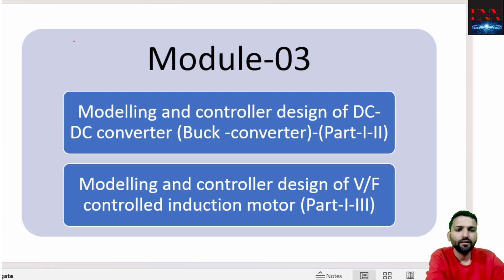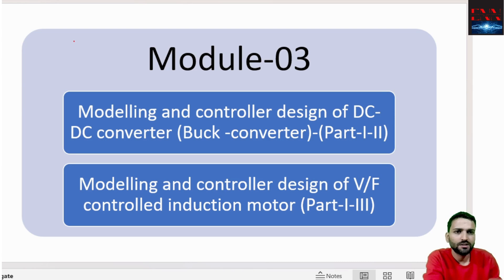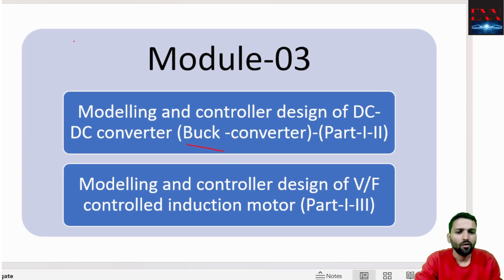The DC-DC converter taken here for the example is the buck converter. As we know, there are different types of converters. In non-isolated converters there are three converters: the buck converter which steps down the voltage, the boost converter which steps up the voltage, and the buck-boost converter. We will be focusing on how to model a buck converter, and this we will be doing in two parts.